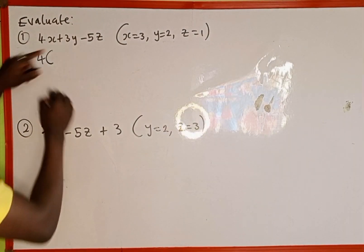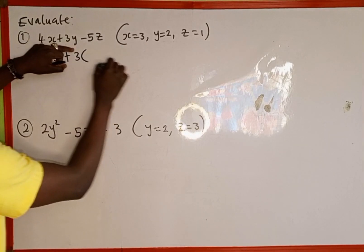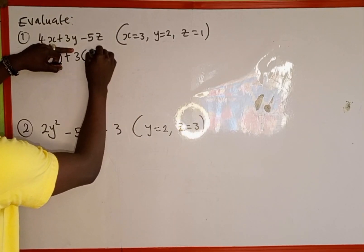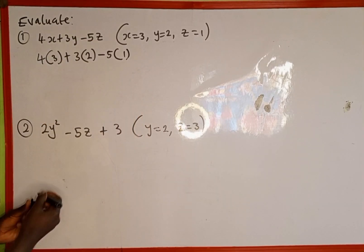So this becomes 4(3) + 3(2) - 5(1). Now we're going to simplify. 4 multiplied by 3 is 12, plus 3 multiplied by 2 is 6, minus 5 multiplied by 1 is 5.